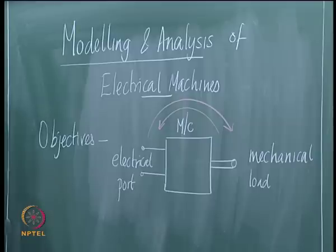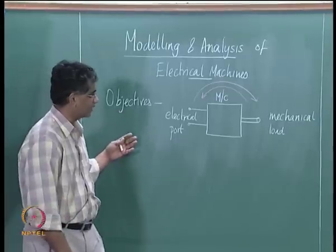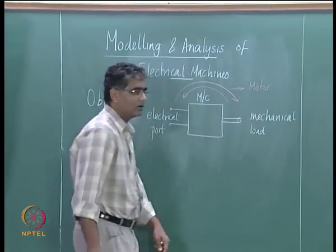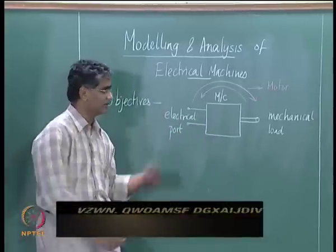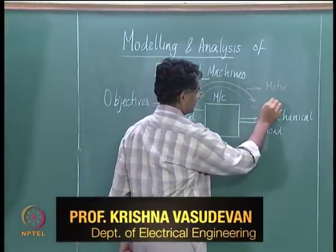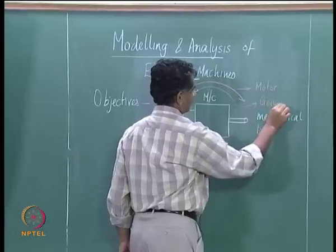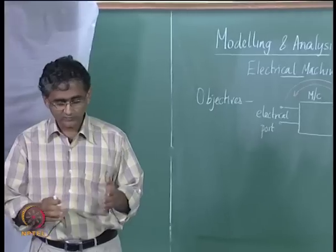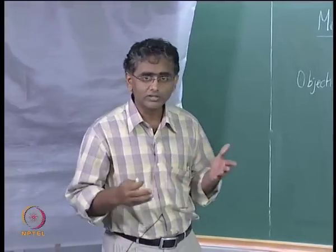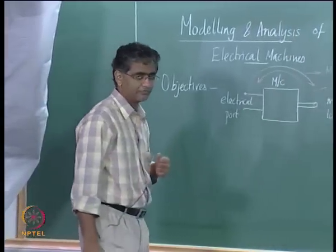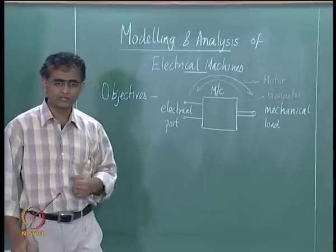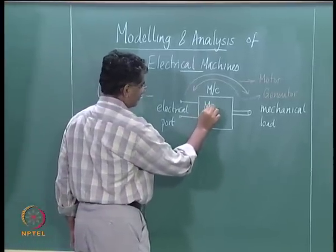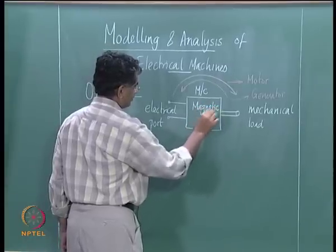An electrical machine is inherently an electromechanical energy conversion system, which means energy may flow from the electrical side to the mechanical side, or from the mechanical side to the electrical side. If the flow of energy is from electrical to mechanical, you call that an electrical motor; if it is from mechanical to electrical, you call that a generator. All machines are inherently able to do both. This electromechanical energy interaction happens because of the presence of a magnetic field inside the machine.